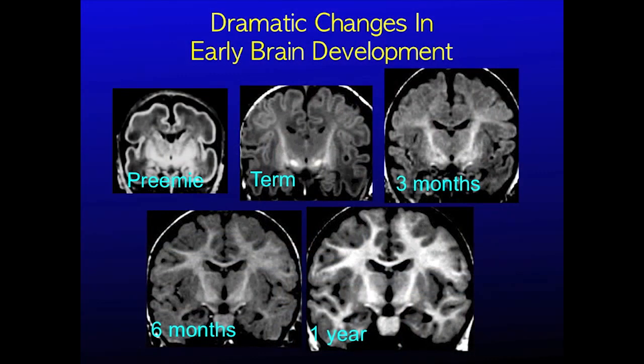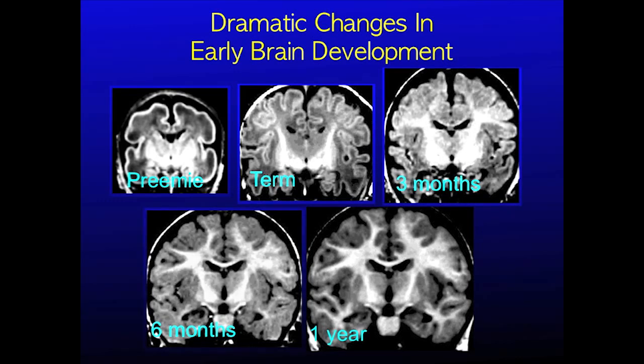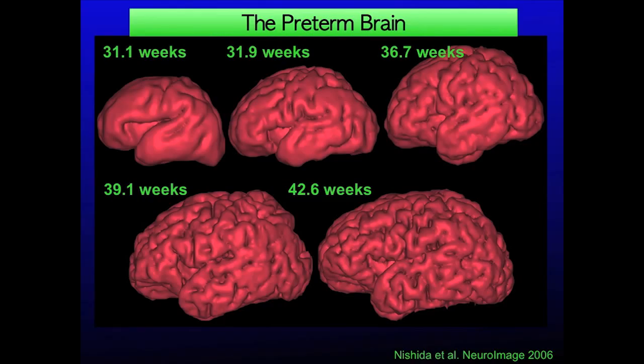Look at these MRI images. Here the babies are facing us and the MRI allows us to see inside the head. During this time period, the brain increases more than three times in volume, the neurons develop more than twice the number of connections, and the energy used by the brain also increases by more than twice. We can take those MRI images and also look at the surface of the brain. You can see that the surface has changed dramatically during early development, from a baby that is 10 weeks premature to a baby that has just passed term.